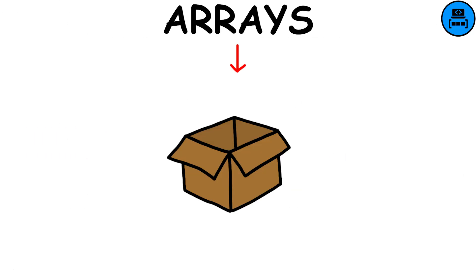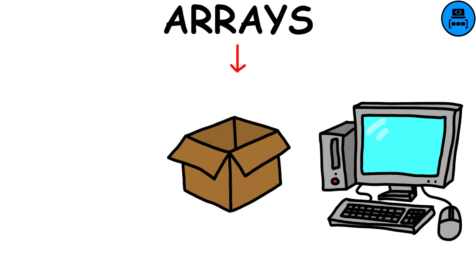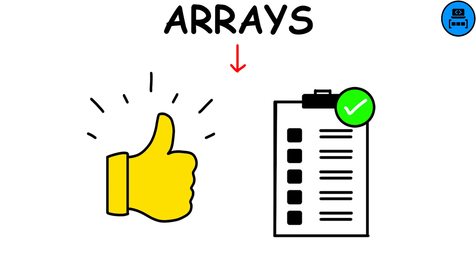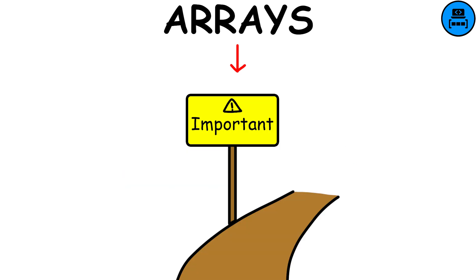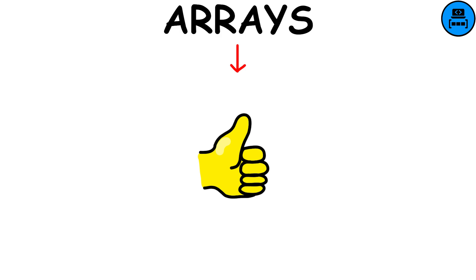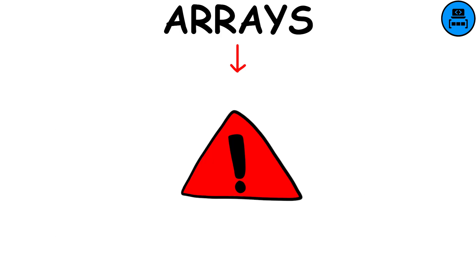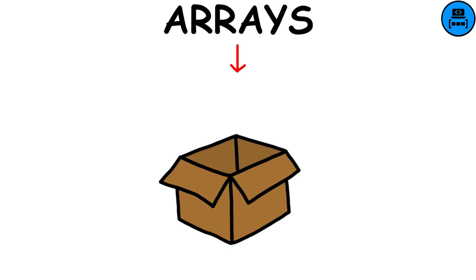Arrays are like boxes that hold many things in a line in the computer's memory. They are good at keeping things organized. Each thing in the box has a number, starting from zero. You can find things in the box quickly because they are all next to each other in the memory. Arrays are an important way to organize data in computer programs. They are good because you can find things in them fast. But there are some problems with arrays. They can only hold a certain number of things, and if you don't use all the space in the box, it's like wasting space.